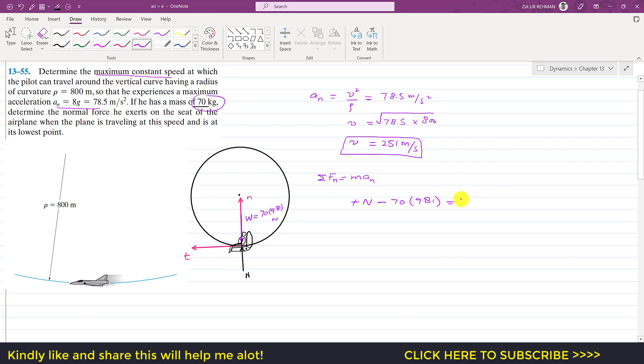So a_n is known which is 78.5 meter per second squared. So we need to find N, so N will be equal to 70 into 78.5 and this will, we need to bring this to the other side of equation so it will become positive